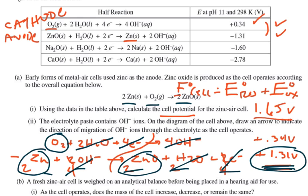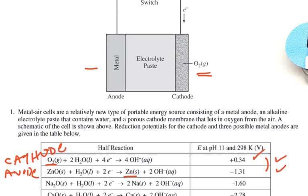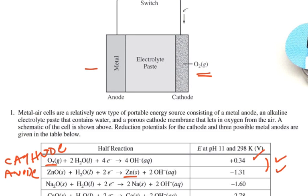The second question is the electrolyte paste contains hydroxide ions. On the diagram, draw an arrow to indicate the direction of the migration of the hydroxide ions. What we can see what's happening is that the hydroxides are produced on the oxygen side, and then they're used up when they get over to the zinc side. So going back to our equation, what we need to do is say hydroxides are migrating to the left. That's all we have to say.